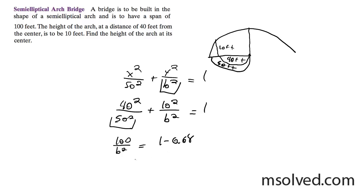And then, let's go up here. So we end up with 0.36 b squared is equal to 100.